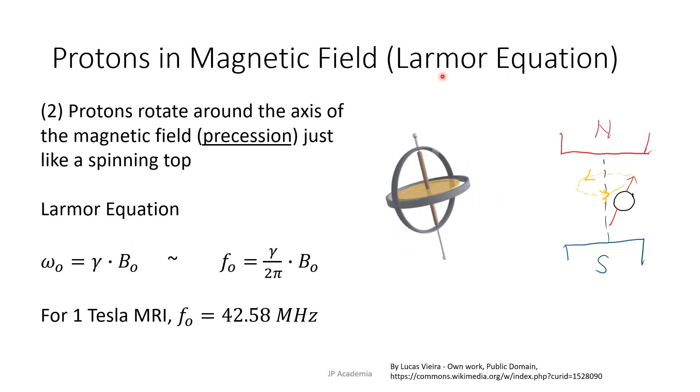And we can also write it in terms of the frequency F0 as illustrated here. It can be seen in this equation that the higher the magnetic field strength, the higher the precession frequency becomes. But why is precession frequency important? It has something to do with the resonance part in the MRI.